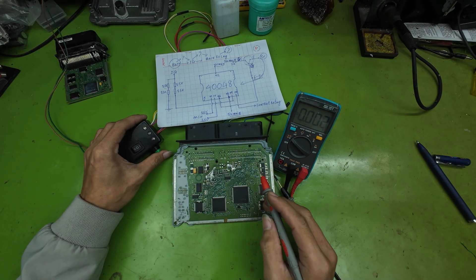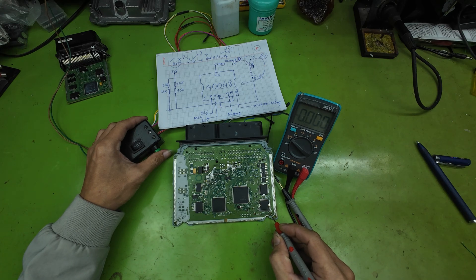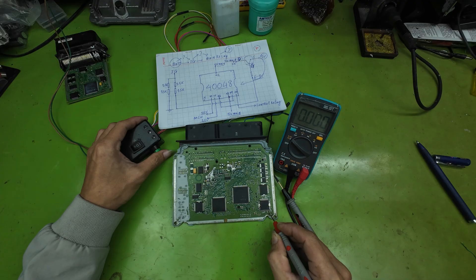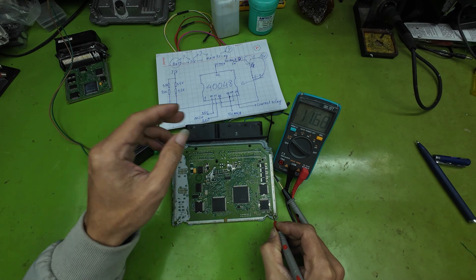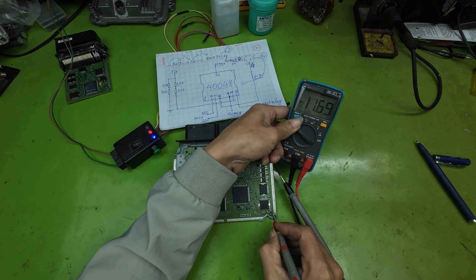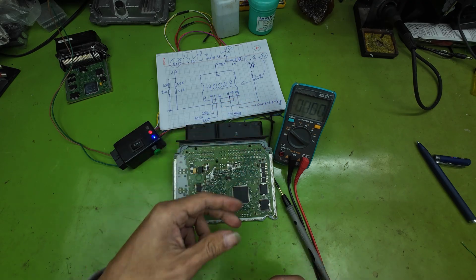First, I will check the IG power supply to pin 19 of the IC, and the main relay control signal at pin 20. Although I believe both signals are fine, I will still measure them so you can observe. As you can see, the IG voltage is already present at pin 19. Let me adjust the meter so you can see it more clearly.